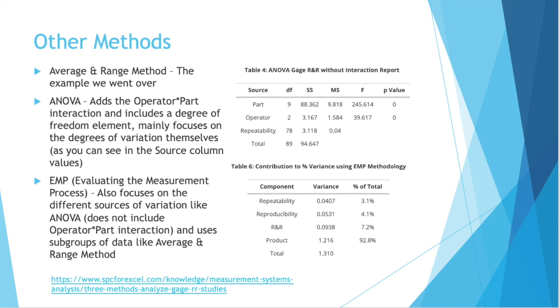There are other ways to calculate your gauge R&R. ANOVA, that adds the operator times part interaction, and includes a degree of freedom element. ANOVA mainly focuses on the degrees of variation themselves. So as you can see in the image on the top right, you have a source column, part operator repeatability, you have DF for degrees of freedom, and then you have several other fields. So ANOVA focuses on those degrees of variation and how much they contribute to the total variation.